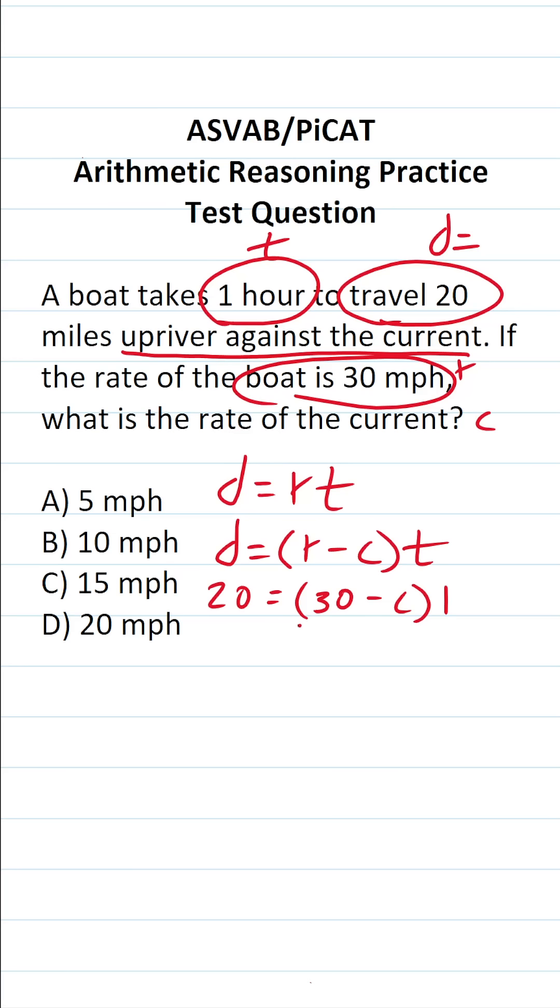So let's solve for C. First, we're going to divide both sides of the equation by 1. This crosses out. 20 divided by 1 is 20. This becomes 30 minus C equals 20.